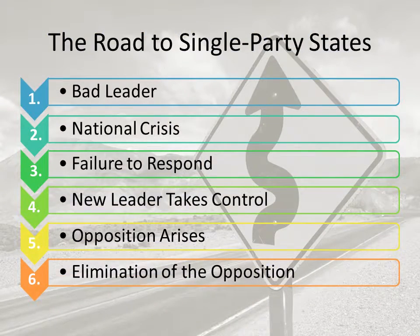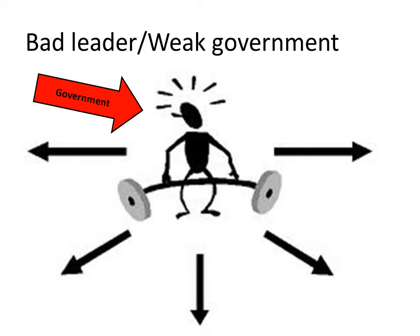When we talk about single-party states, they don't just appear out of nowhere — there is a path that they all follow. First, there has to be a bad leader. Second, there has to be a national crisis, something that scares everybody. Third, that bad leader has to do a poor job of taking care of the crisis, leaving everybody still scared. Fourth, a new leader comes to power. Fifth, somebody stands up to and opposes that new leader. Sixth, the new leader destroys the people opposing him. The first step is that there has to be a bad leader or weak government — one that cannot get the people to follow them, or a government not supported by its citizens and unable to make or enforce laws.